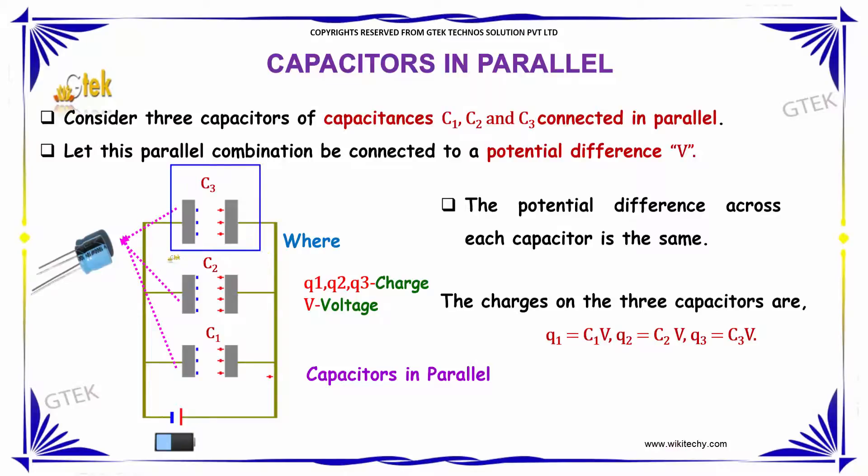Capacitors C1, C2, and C3 are connected in parallel combination. Let this parallel combination be connected to a potential difference V. The potential difference across each capacitor is the same.